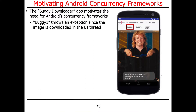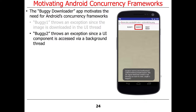Buggy1, if you click it, will throw an exception since it's trying to download an image in the user interface thread — you're trying to do a network operation, which is verboten. Buggy2 will throw an exception since a UI component is being accessed by a non-user interface thread, a background thread. These demonstrate what happens if you try to break the rules — for example, the error says only the original thread that created the view hierarchy can touch its views.